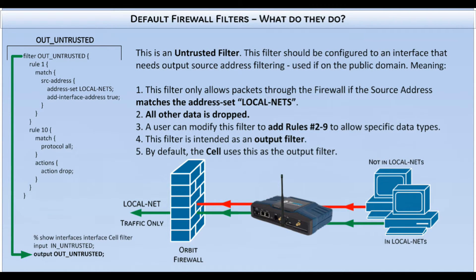The last pre-configured filter is the OutUntrusted filter. This filter is the strict version of the OutTrusted filter and should be used on an interface connected to the public network. It will allow only local nets data to pass through the firewall out of the Orbit, plus any user-configured rules allowing additional traffic types. Local nets is used to define an address or subnet of addresses. The Orbit's firewall uses these addresses to determine what is allowed to be sent out of an interface configured with the OutUntrusted filter. The Orbit by default has this filter applied to the cell interface. It's very important to update the local nets parameter to include all of your local subnets connected to the Orbit that wish to route out of the cellular interface.